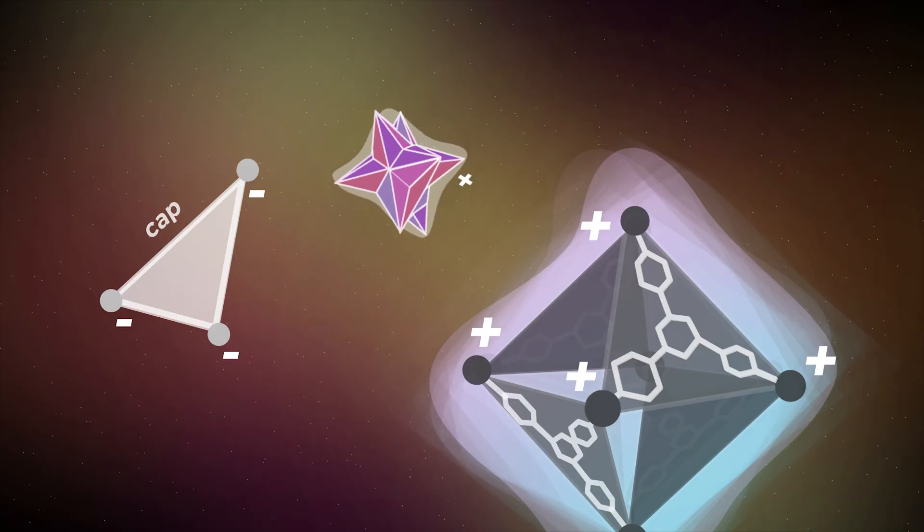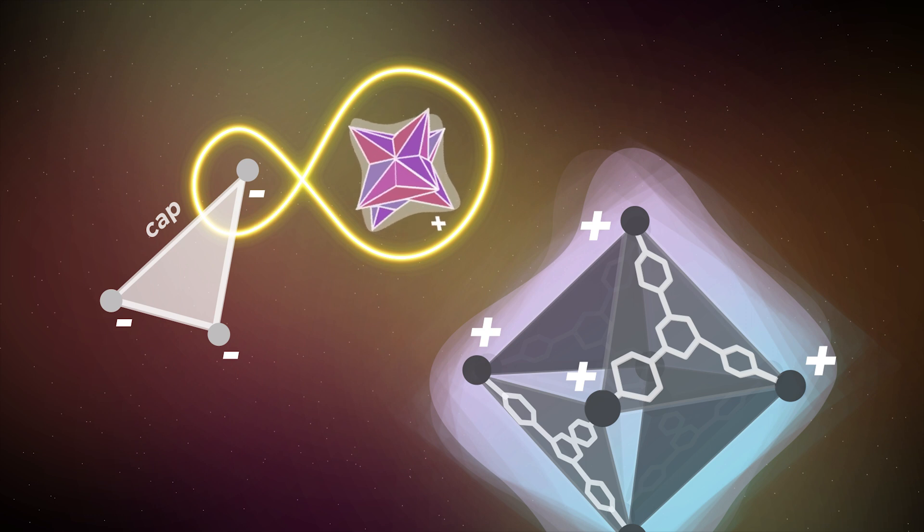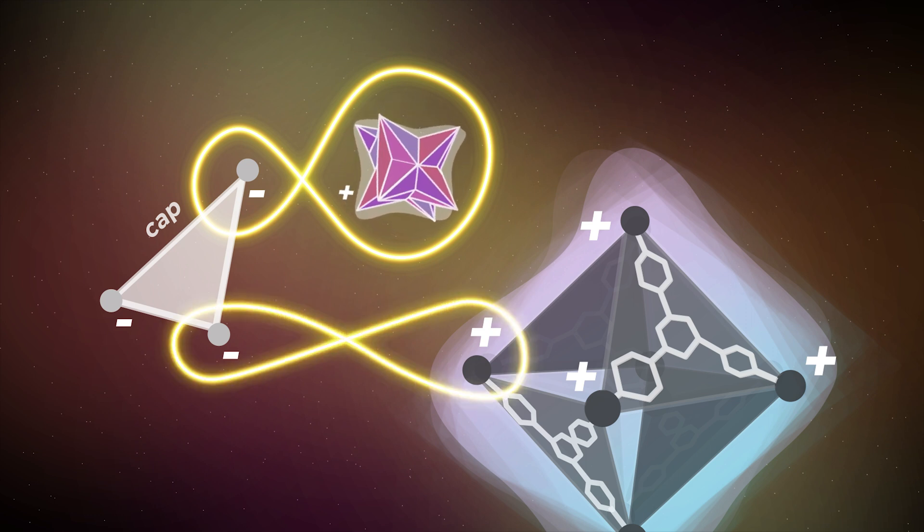Scientists are pretty clever and thought, what about a negatively charged cap for the positively charged cage? It's so simple because the negative charges on this cap would attract a positively charged guest, as well as the positively charged molecular cage.